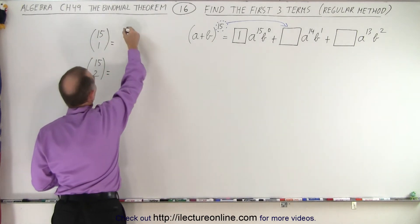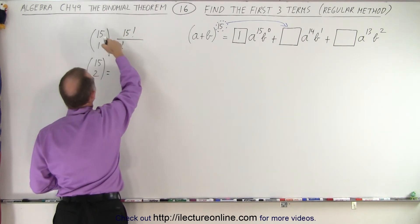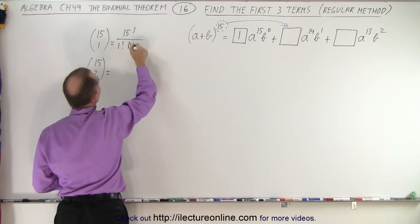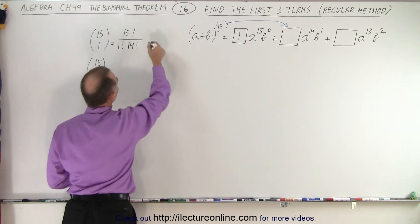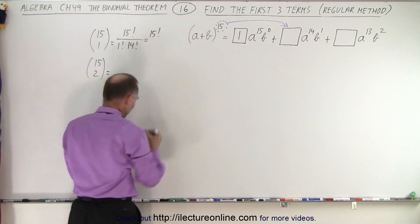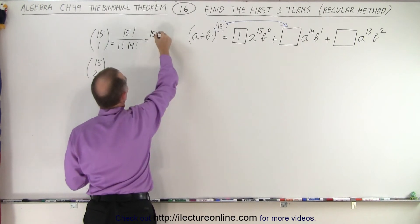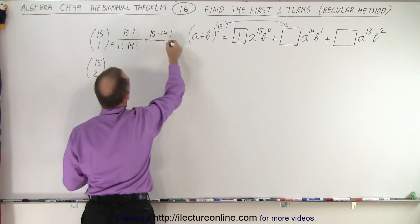So this is going to be 15 factorial divided by one factorial divided by the difference between the two, which is 14 factorial. So in this case, that will be equal to 15 multiplied times 14 factorial divided by one factorial, which is one times 14 factorial.